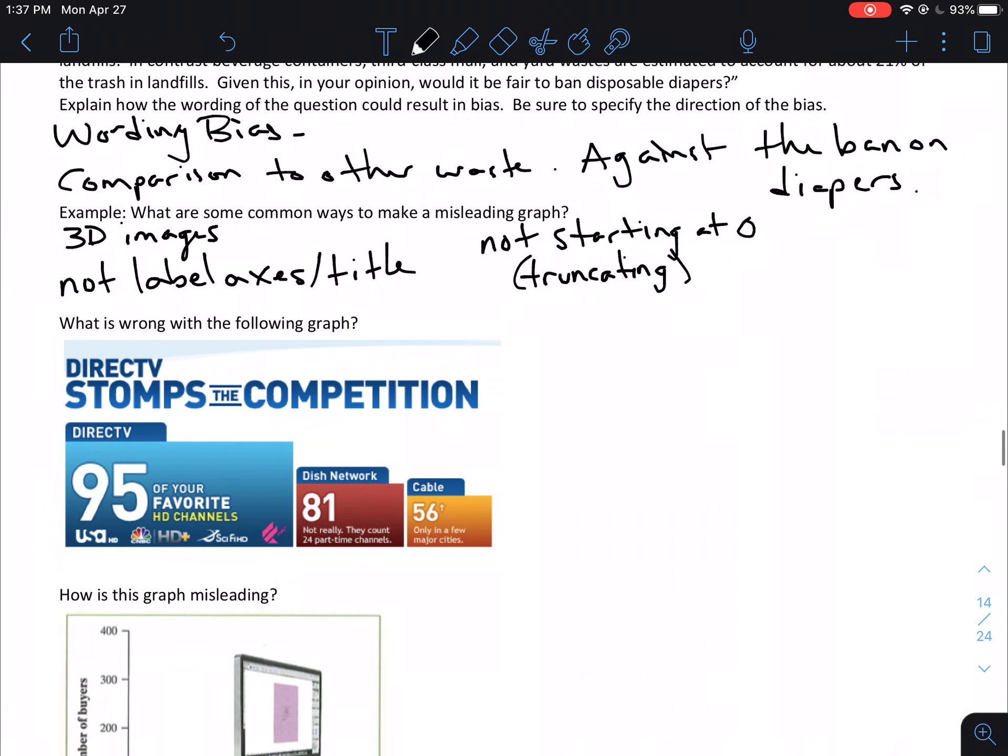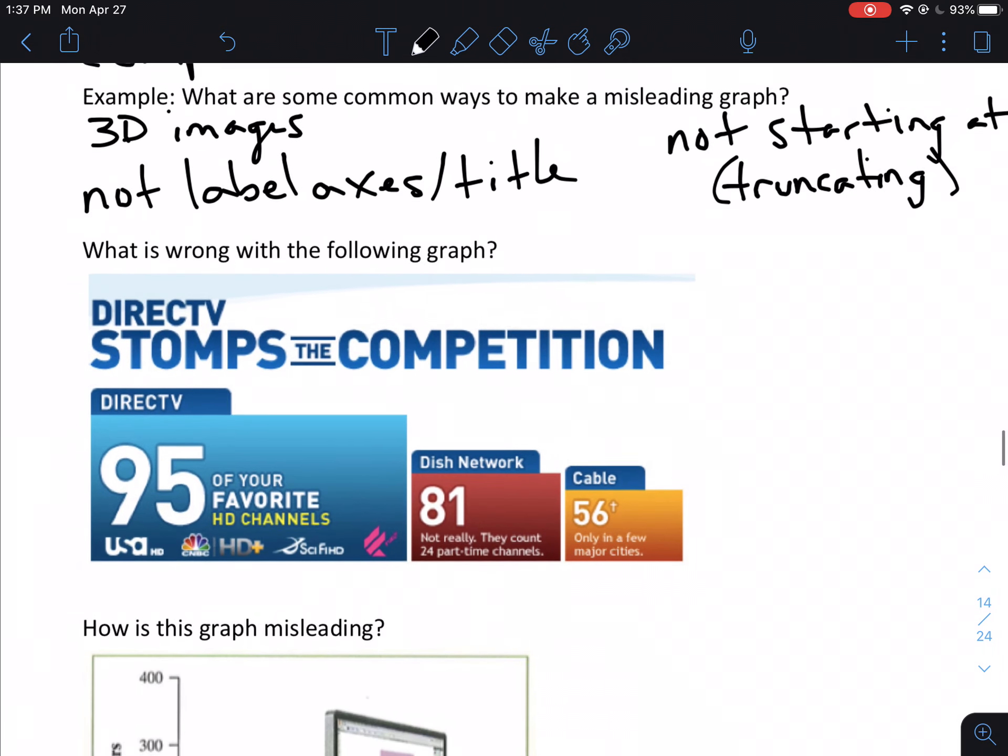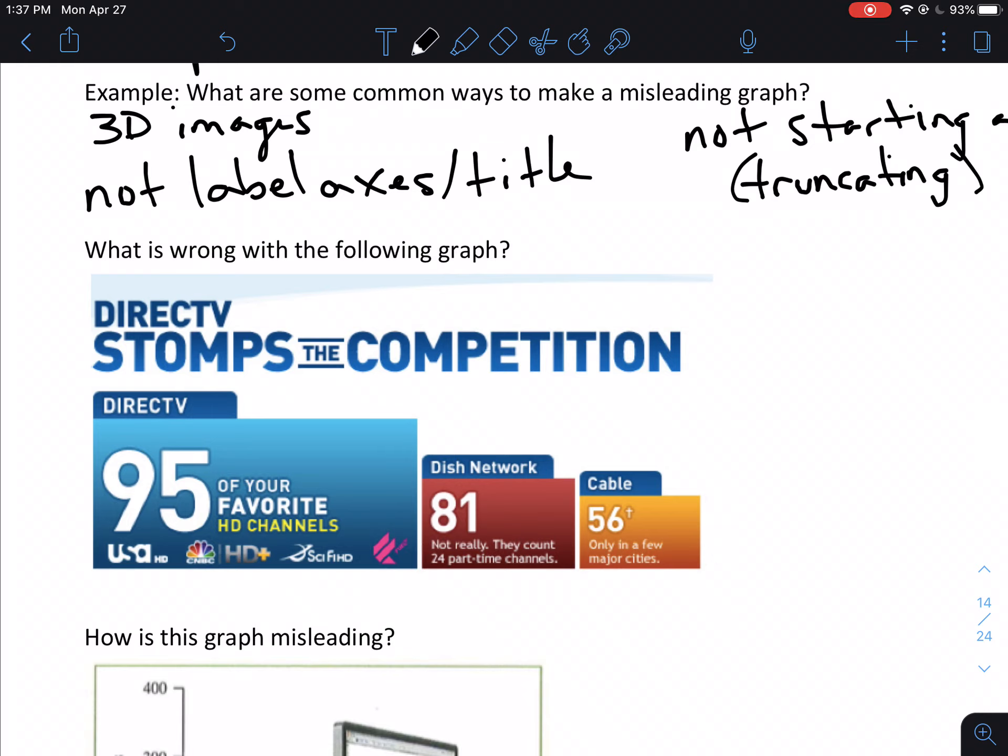Okay, so let's take a look at the following graph. So I took this from an advertisement for DirecTV. So it says DirecTV stops the competition. It says DirecTV has 95 of your favorite HD channels. And then it's got a list of those channels, USA, CNBC, SyFy, and then another one that's kind of hard to see there. It looks like they're all HD channels, which are always the better ones to watch. But then it's also got Dish Network, where it has 81, but not really. They count 24 part-time channels. And then Cable with only 56, which is only in a few major cities.